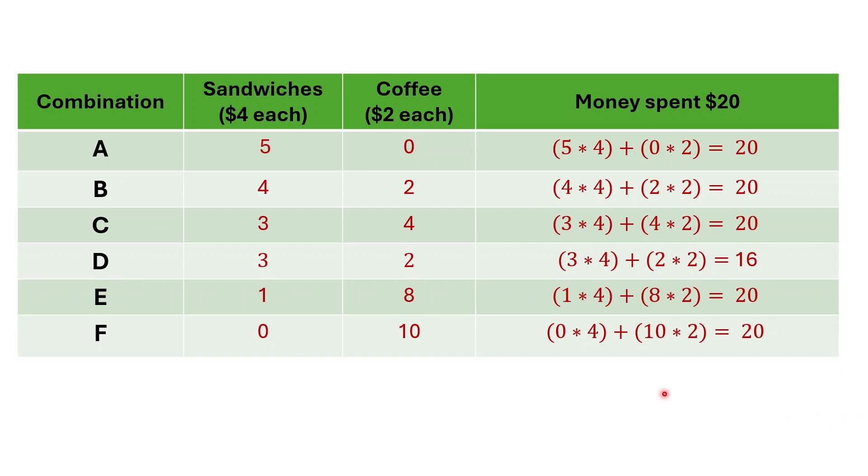Here is a table showing different combinations of sandwiches and coffee that the consumer can buy with the $20 budget. These combinations make up the budget set. As you can see, the budget set includes combinations like five sandwiches and zero coffees, where the entire $20 is spent, as well as bundles like three sandwiches and two coffees, where $4 remains unspent.